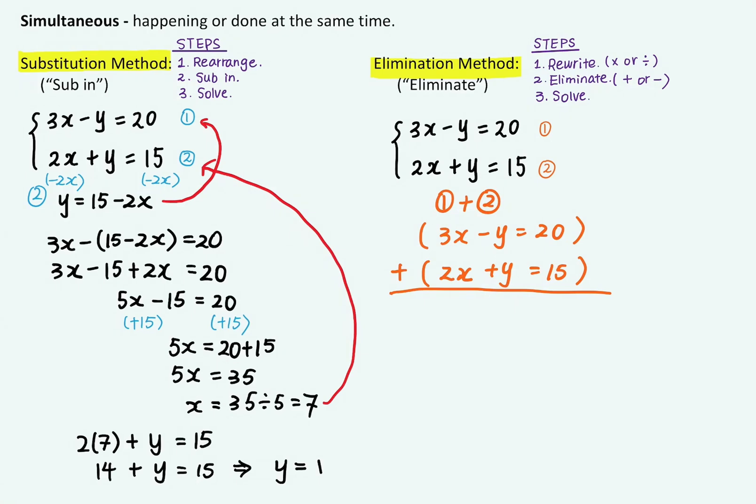3x plus 2x equals 5x. And positive y plus negative y equals 0. So it'll give me 0y. So the y term is now gone. And the two constant terms, 20 plus 15 equals 35.